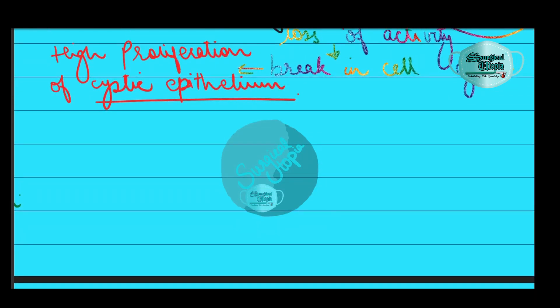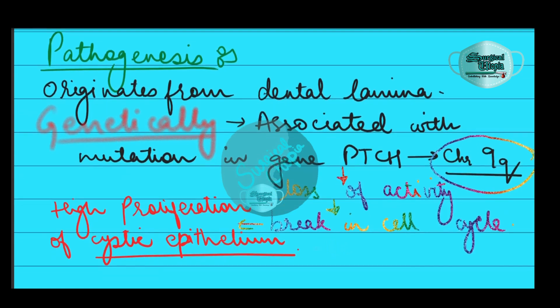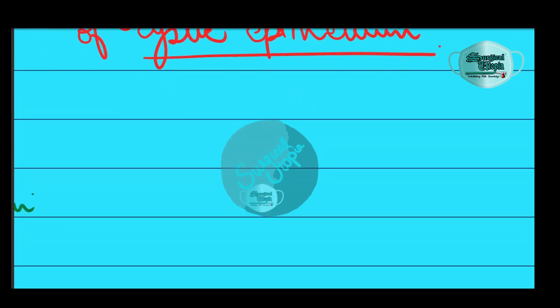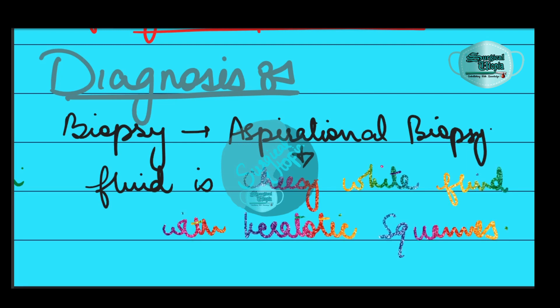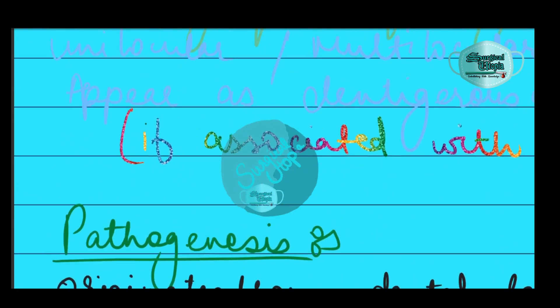Diagnosis is usually done through radiological means, but the definitive diagnosis is through biopsy. Aspirational biopsy of the odontogenic keratocyst contains greasy fluid, pale in color, with keratotic squames. The protein content of the cyst fluid is below 4 grams percent, which is diagnostic of the odontogenic keratocyst.